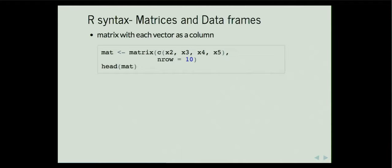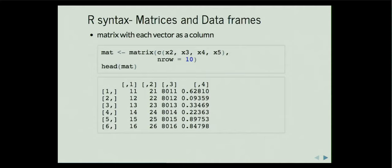We can have vectors and then we can have matrices. Matrices are just columns or rows of vectors, and we can combine them. Another great thing about R is that you can nest functions within itself — you can create a really long function that has a whole bunch of other functions built within it. Here the first function that will be called creates a group of these five objects that we already assigned earlier, and then it creates a matrix of it with 10 rows. When you look at the function 'head', it just looks at the header — the first six rows or so. So then we can see the first column, second column, third column, fourth column that we assigned as objects earlier.